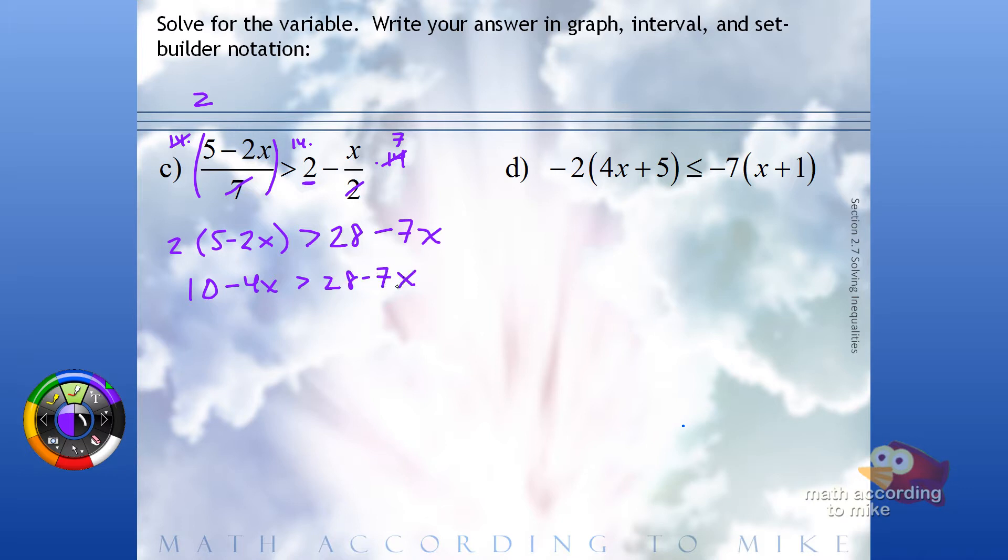And now this is like part b. We're going to add 7x to bring the variable to the left. We're going to subtract 10 to bring the constant to the right. Adding 7x, we get 3x now.